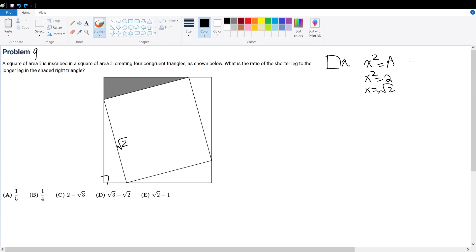Now for the outer square. The outer square, y squared equals 3. Therefore, y equals root 3. Therefore, all these side lengths are root 3.